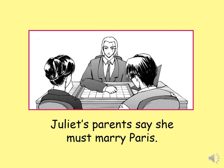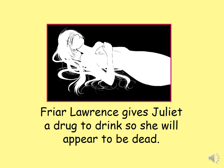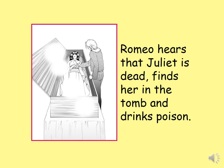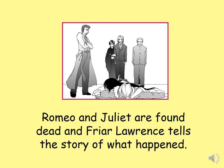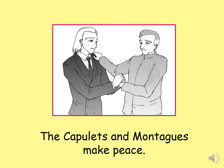Juliet's parents say she must marry Paris. Friar Lawrence gives Juliet a drug to drink so she will appear to be dead. Romeo hears that Juliet is dead, finds her in the tomb and drinks poison. Juliet wakes up, finds Romeo is dead and kills herself. Romeo and Juliet are found dead and Friar Lawrence tells the story of what happened. The Capulets and the Montagues make peace.